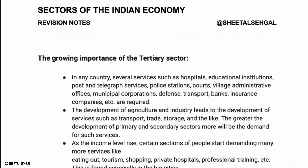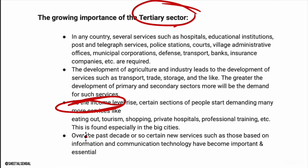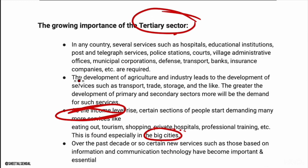The tertiary sector in our country is increasing. As people's income rises, their demand for services increases — for example, doctors, teachers, salon services, tourism, shopping, private hospitals, and professional training, especially in big cities. If people have money, they prefer doctors; if not, they go to a medical shop. Either way, our service sector is growing.